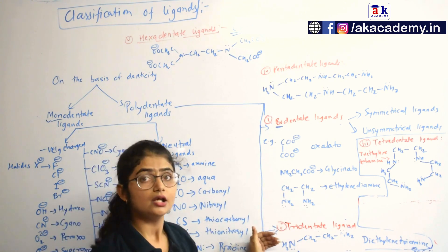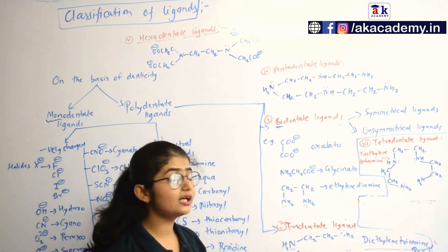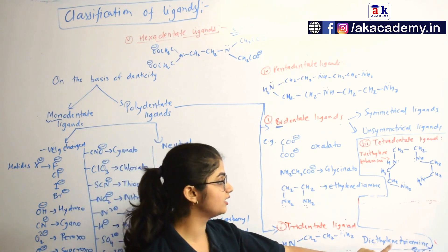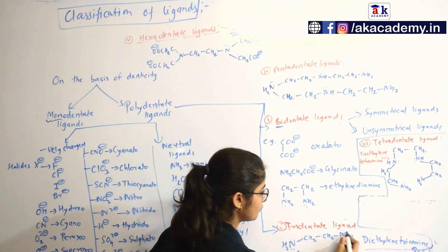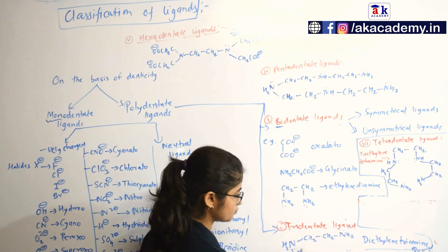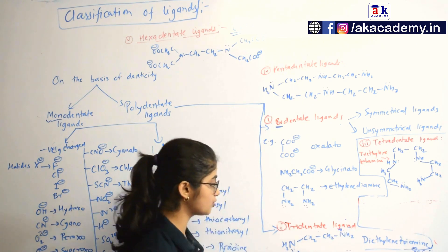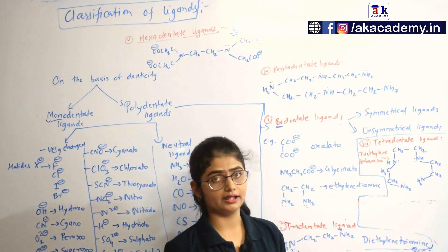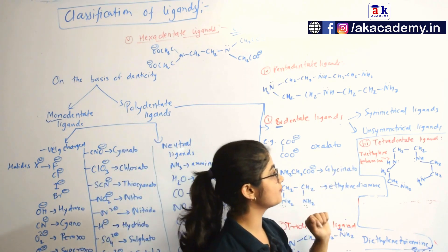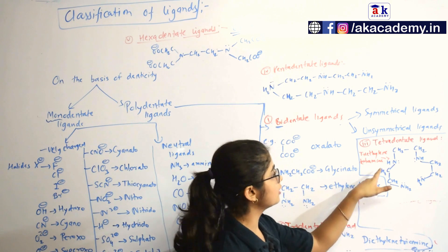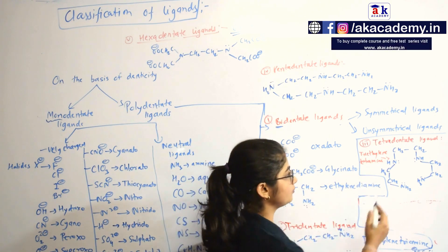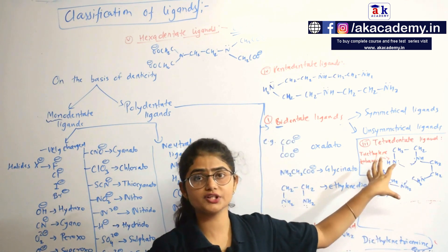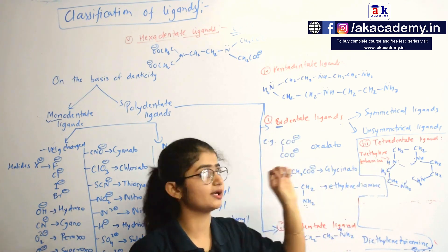Next is the tridentate ligand, which has three sites of attachment. The example is diethylenetriamine — you can see the first, second, and third attachment points. Then we have the tetradentate ligand, which has four sides of attachment to the metal — that is triethylenetetraamine, with four attachment points.